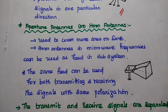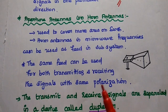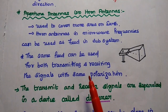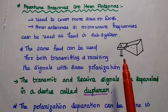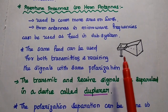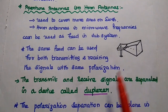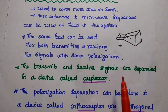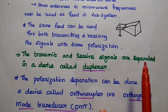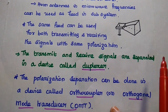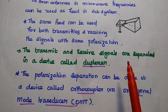The next type is aperture antennas, or horn antennas. These antennas are used to cover more area and operate in the microwave frequency range. The same feed can be used for both transmitting and receiving signals with the same polarization. For uplink, a horizontally polarized signal can be received, while a vertically polarized signal is transmitted at the same time — so the same polarization scheme is used in the horn feed antenna.